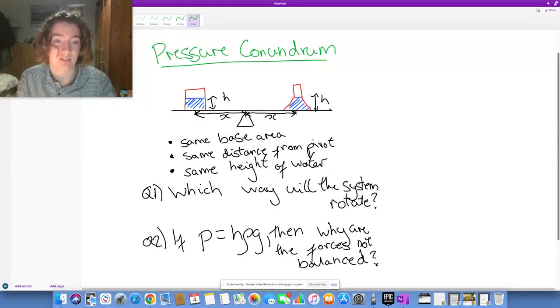Now both amounts of water have the same density, and the center of both of the flasks, assuming they're symmetrical, the center from the pivot is of the same displacement from the pivot. And so we're asked, given that the two flasks have the same base area, the same distance from the pivot, and the same height of water,